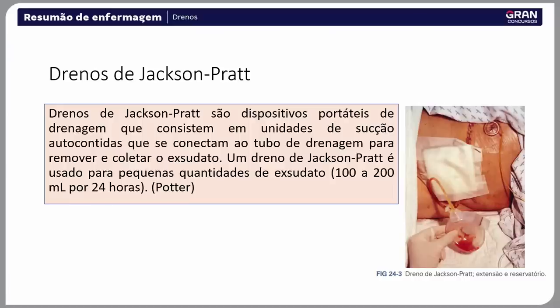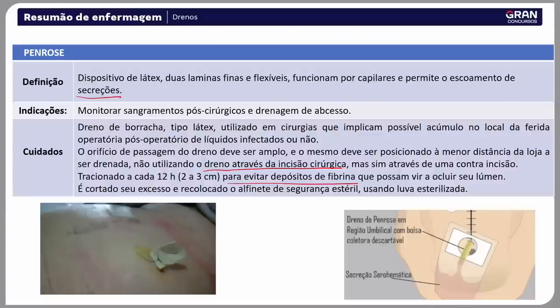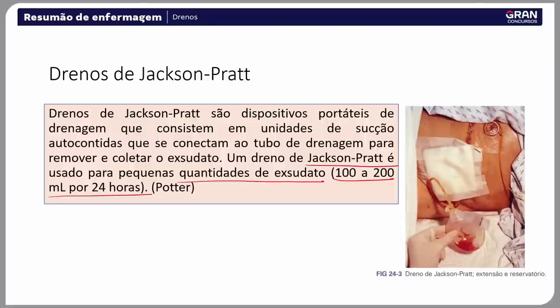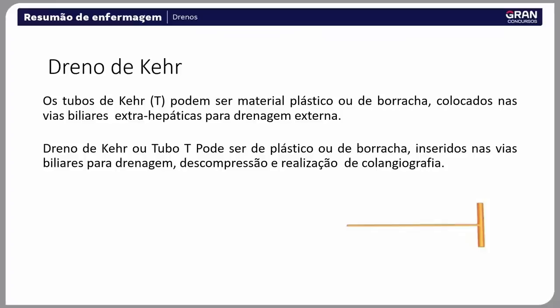O Jackson-Pratt é um dispositivo portátil de drenagem que consiste em unidade de sucção autocontida conectada a um tubo de drenagem para remover e coletar o exsudato. É usado para pequena quantidade de exsudato, de 100 a 200 ml por 24 horas. A sucção vai puxando o líquido da cavidade ao comprimir a bolinha transparente e fechá-la.